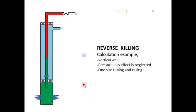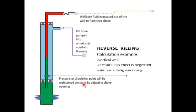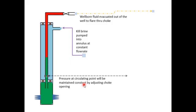The wellbore fluid will be evacuated from the tubing head passing through the jug. Kill brine will be pumped into the annulus. The pump will operate at constant fluid rate, and we will maintain the pressure at the circulating point constant by adjusting the jug opening.